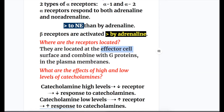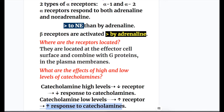What are the effects of high and low levels of catecholamines? If catecholamines are at a high level, they decrease the number of receptors, leading to a decreased response to catecholamines. If catecholamine levels are low, there is an increase in the number of receptors, which increases the response to catecholamines.